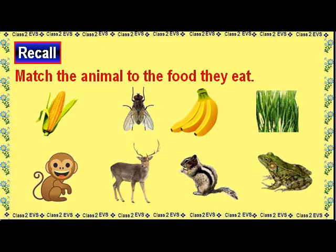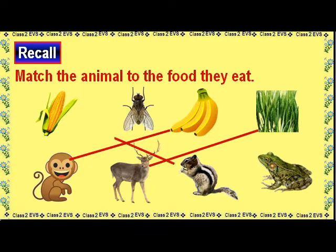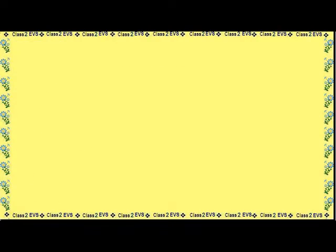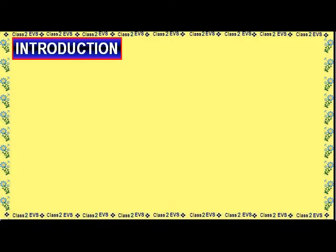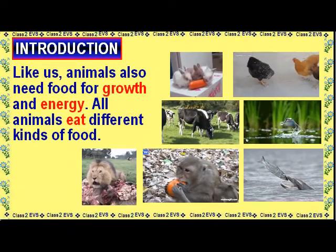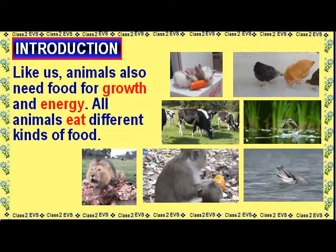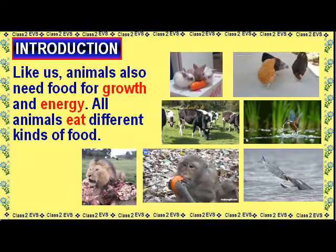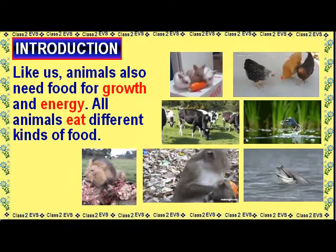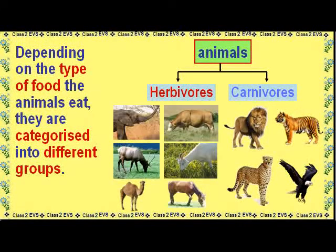Recall: Match the Animal to the Food they Eat. Monkey matches with Bananas. Deer matches with Grass. Squirrel matches with Corn. Frog matches with Fly. Introduction: Like us, animals also need food for growth and energy. All animals eat different kinds of food. Depending on the type of food the animals eat, they are categorized into different groups.